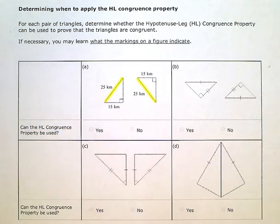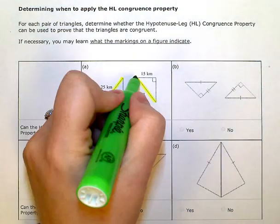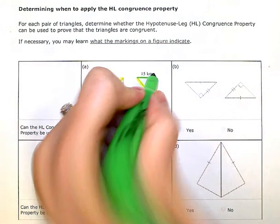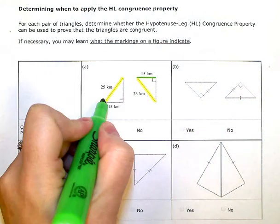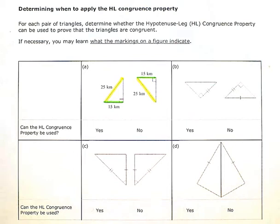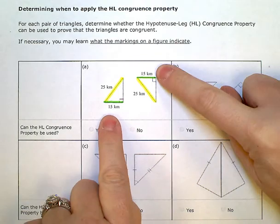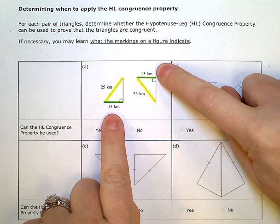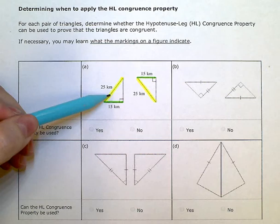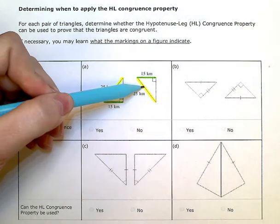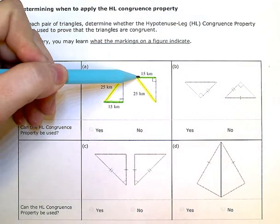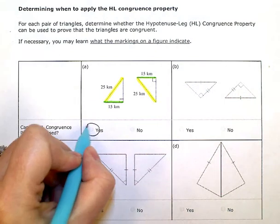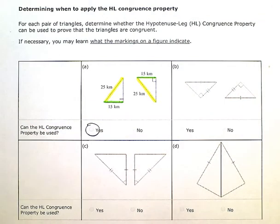Now I need a corresponding leg. The short leg on the first triangle and the short leg on the second triangle are a corresponding pair, and those two are also congruent — both marked 15 kilometers. So I have the hypotenuse of each triangle and one pair of corresponding legs that are congruent. Yes, I can apply this theorem.